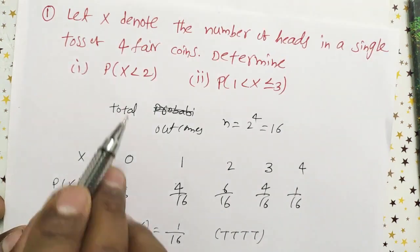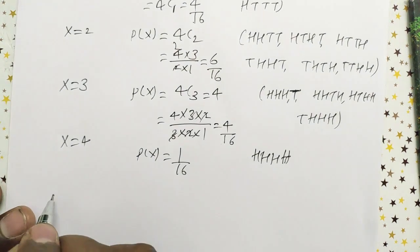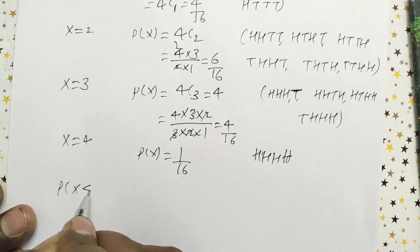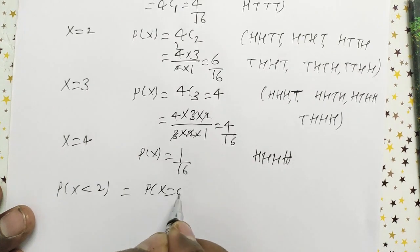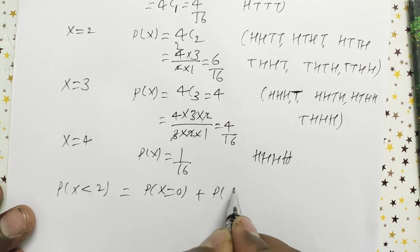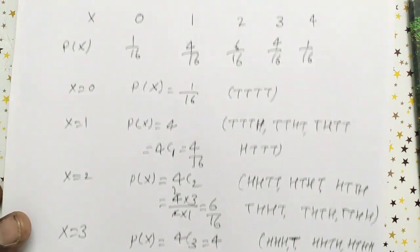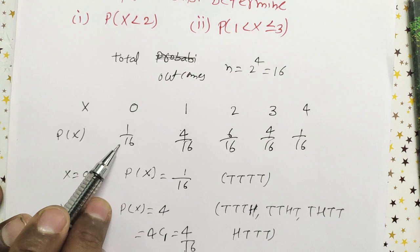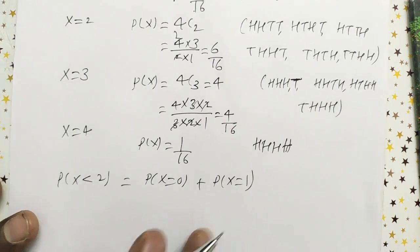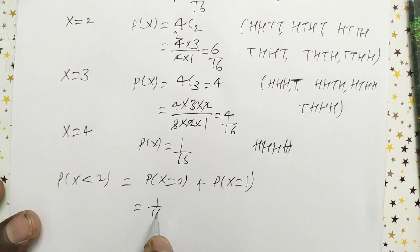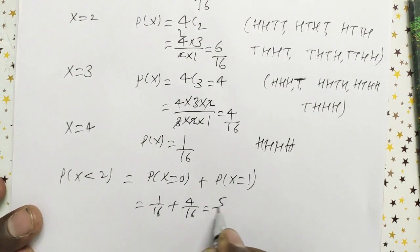Now for the first question: P(X < 2). P(X < 2) = P(X=0) + P(X=1) = 1/16 + 4/16 = 5/16.